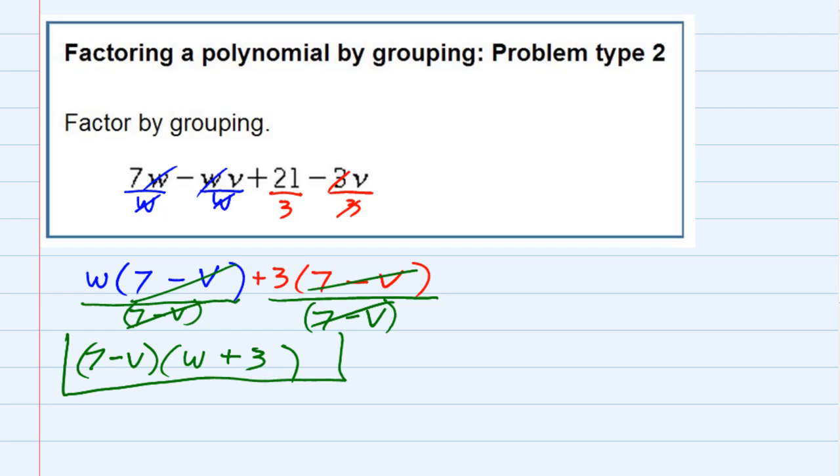So our factored form is 7 minus v and w plus 3.